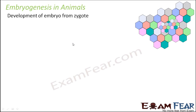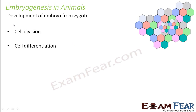When the zygote is formed initially, it is a diploid cell and just one single cell. But after that, it undergoes a lot of division. The processes that help the zygote grow from a single cell to an embryo are cell division and cell differentiation.